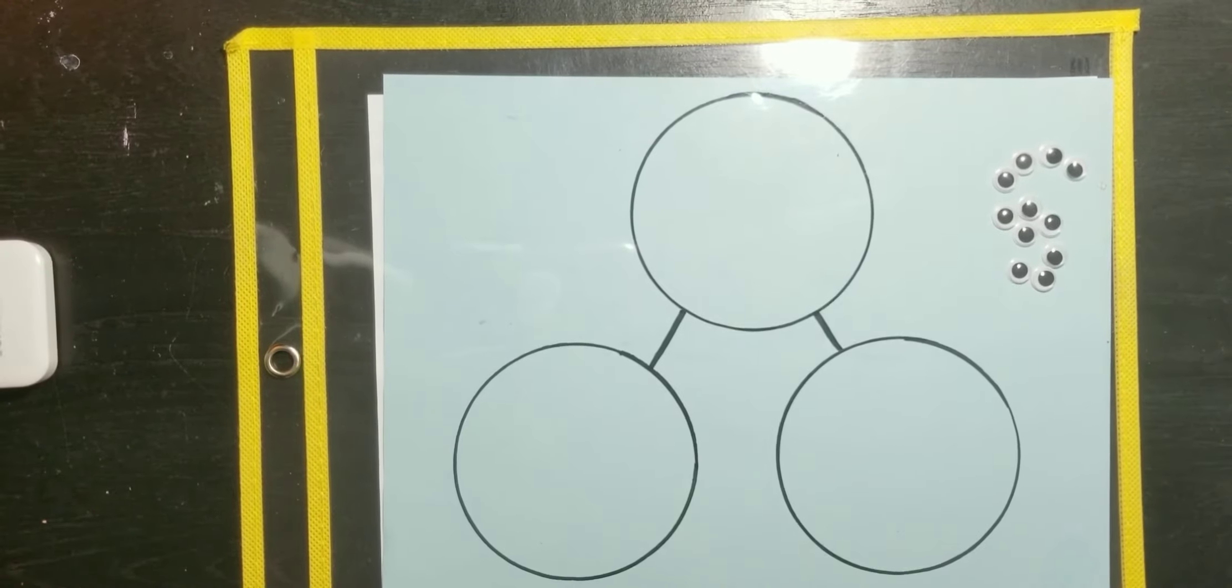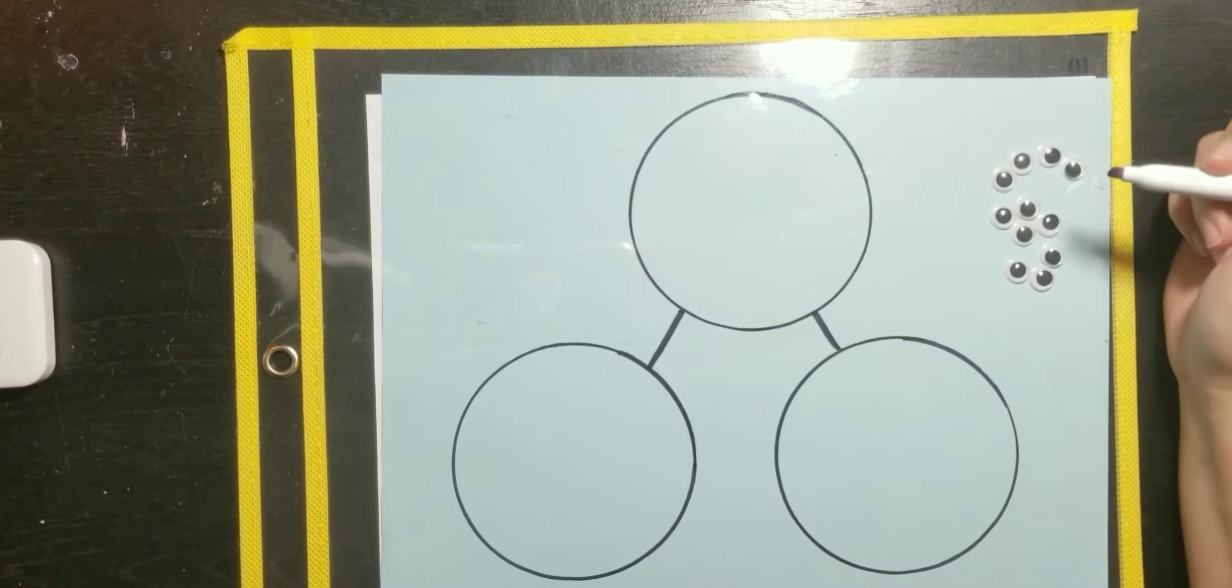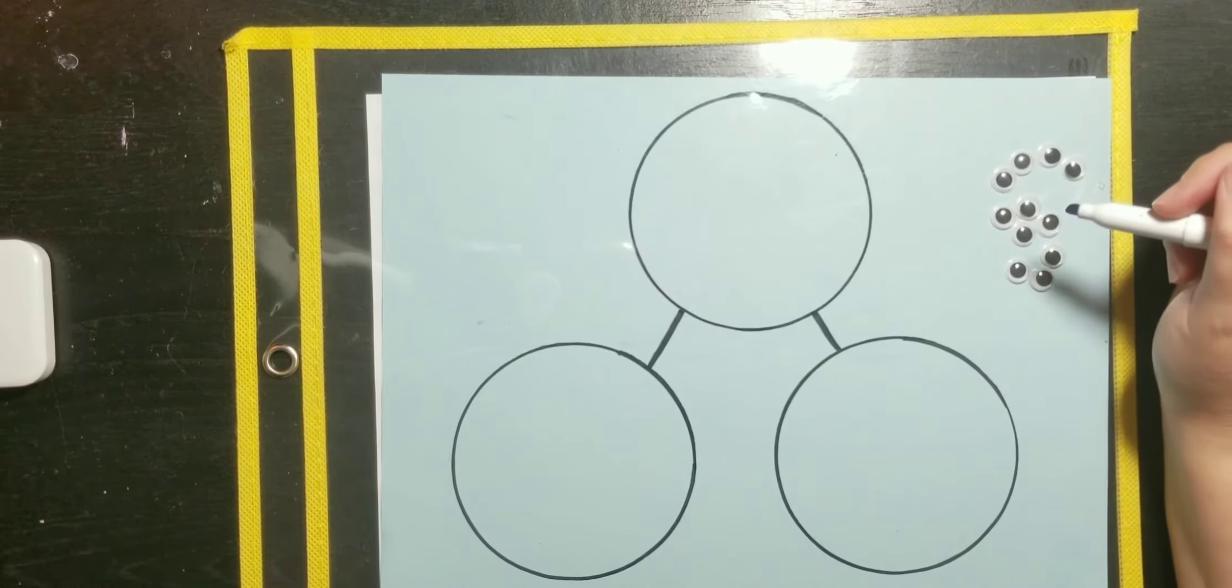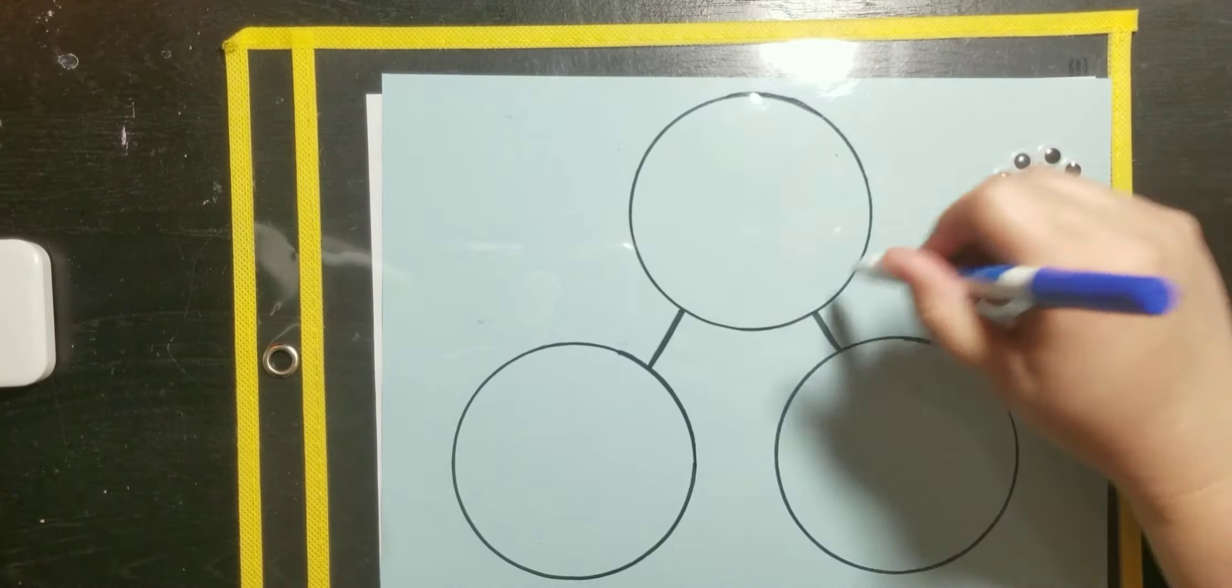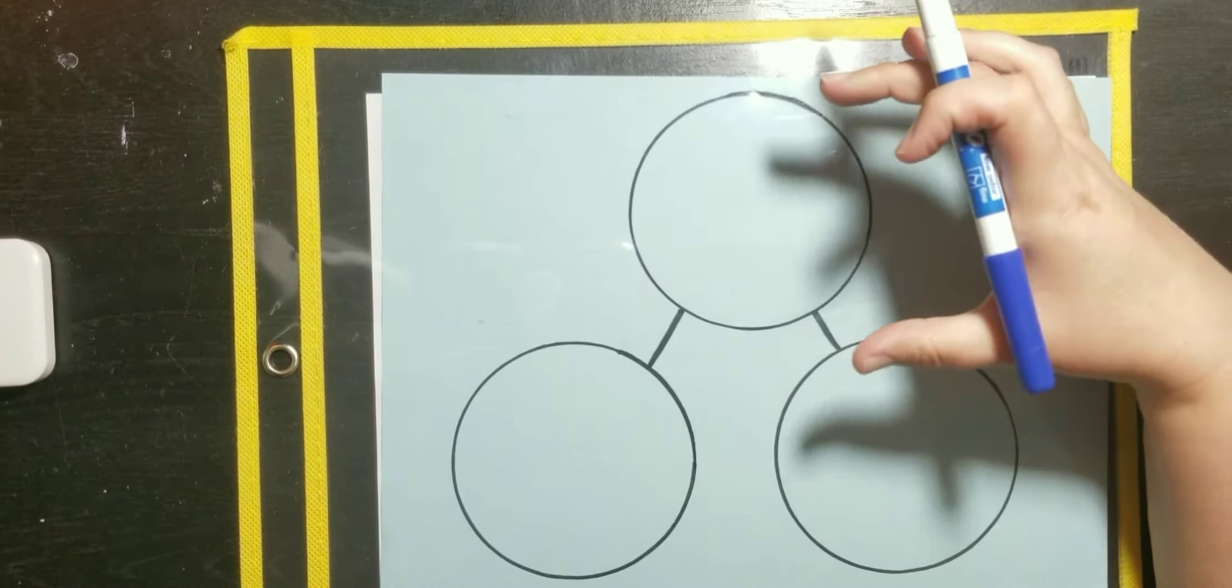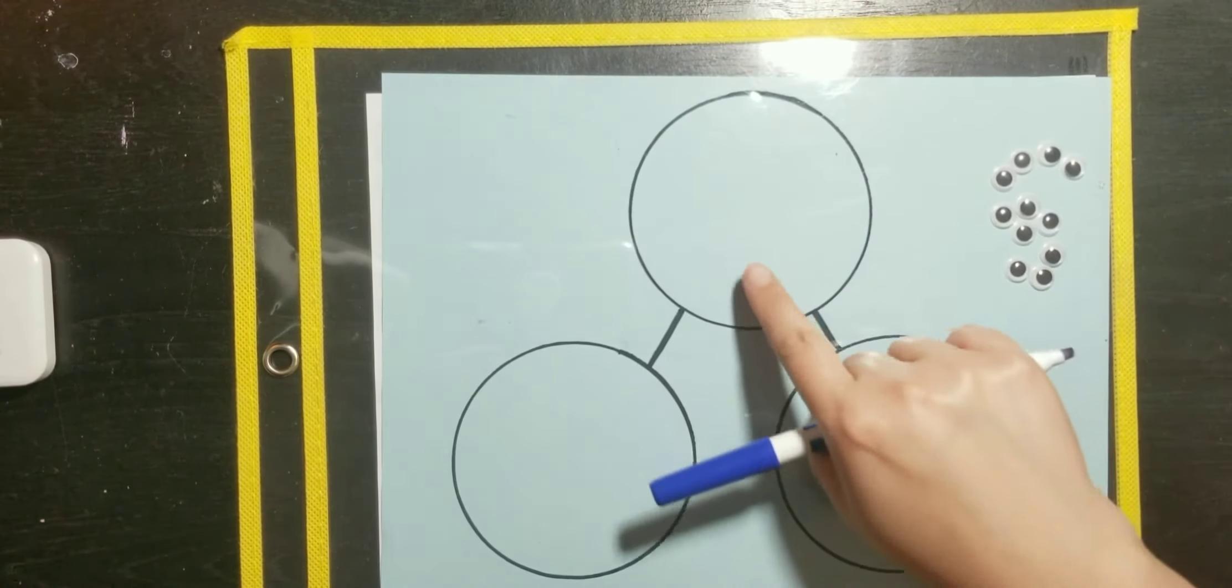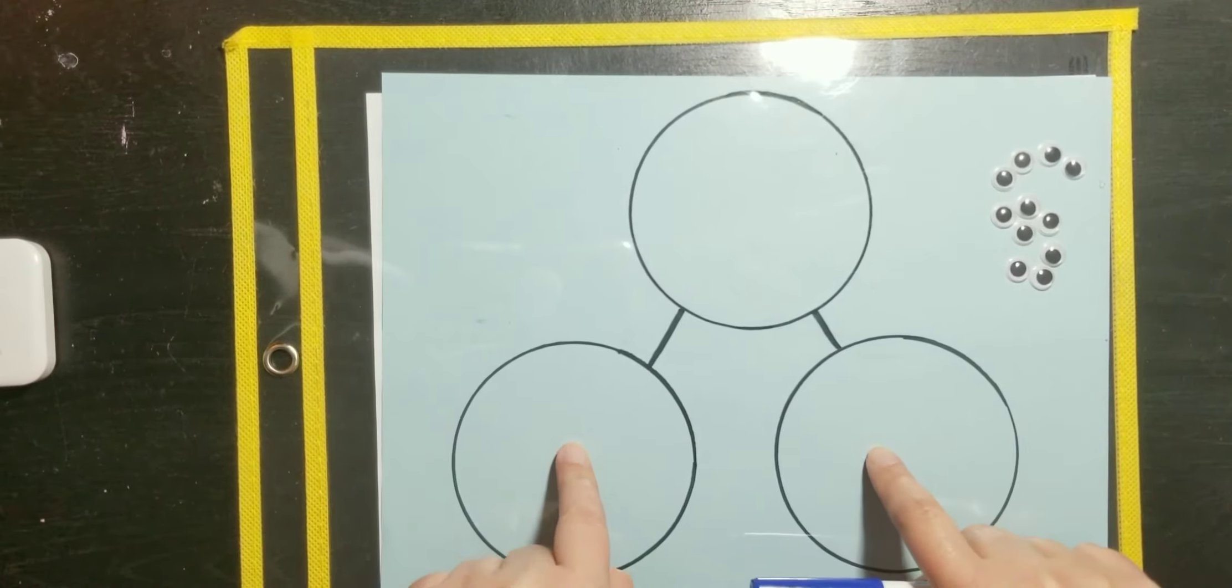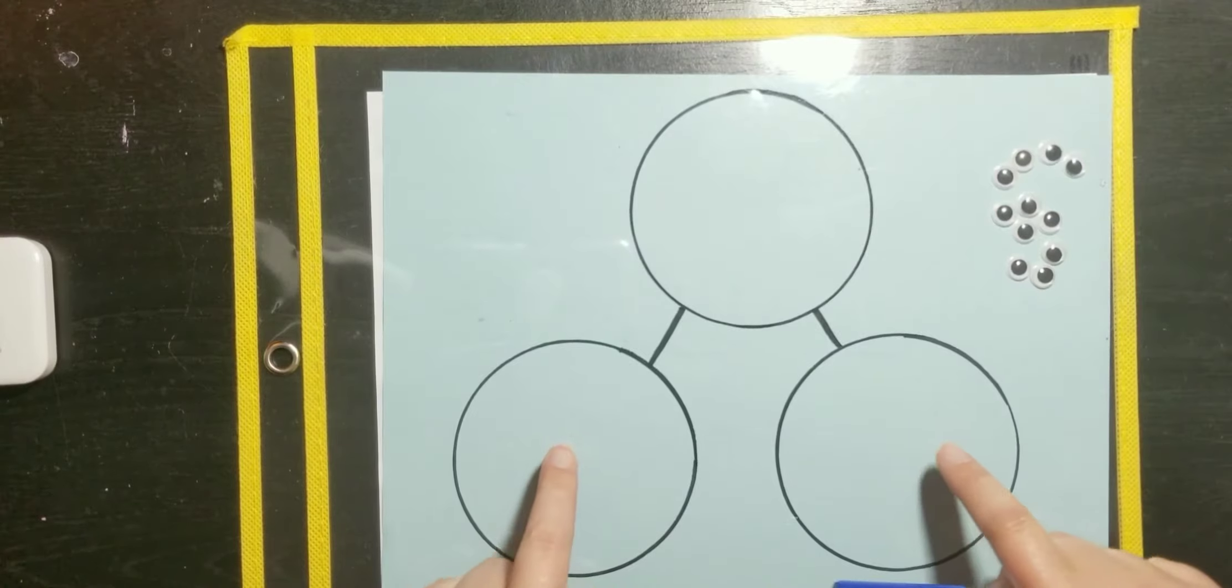Today we're going to do a number bond here on my table. I have drawn out a number bond for us to use and I will give you a story problem today and we're going to solve it together on this number bond. You can do this with me at home. It's pretty easy to draw, just trace some circles. I used a cup from my kitchen and traced the circle. Make sure you have one circle that has two lines attached to the other two circles. This is our whole circle and these two circles are for the parts.